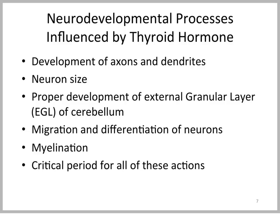Thyroid hormone is crucial to the development of axons and dendrites, the branching of dendrites, neuronal size, and the development of the cerebellum. Much of this occurs after birth, so animals with congenital hypothyroidism can have balance problems. At crucial stages of neurodevelopment, thyroid hormone impacts the migration and differentiation of neurons — there are key critical periods — and thyroid hormone is critical to appropriate myelination of myelinated nerves.